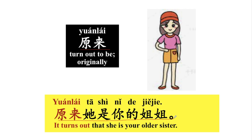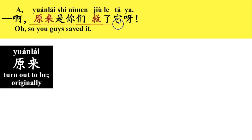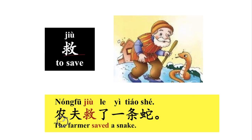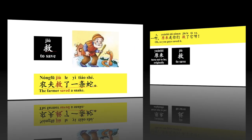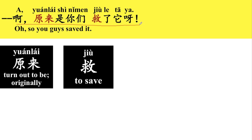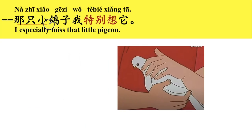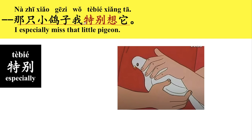啊，原来是你们救了他呀。好，我们来看一下救。救就是to save. 好，我可以说，农夫救了一条蛇。The farmer saved a snake. 好，the measure word for 蛇 snake is 条. 那只小鸽子，我特别想他。好，那我们来看一下。特别就是especially.